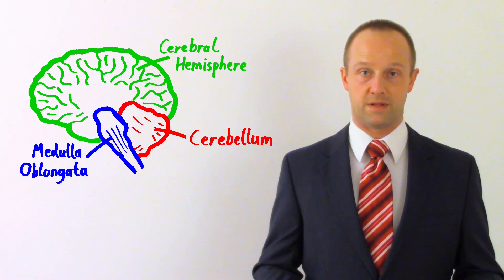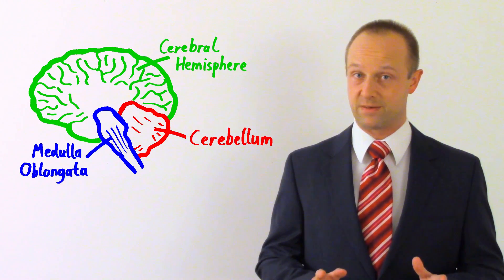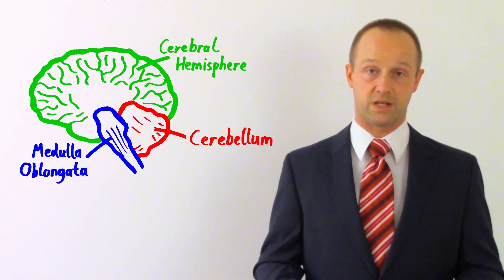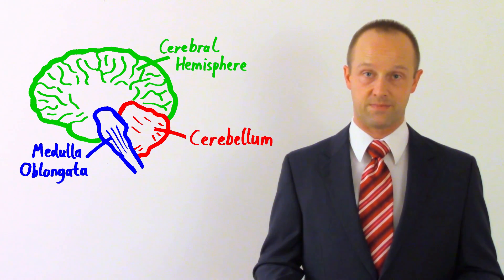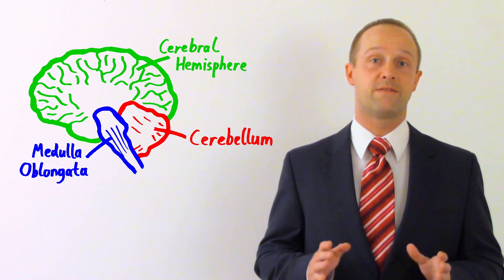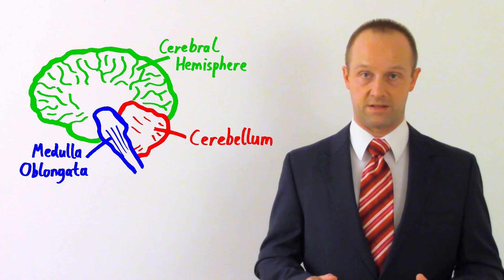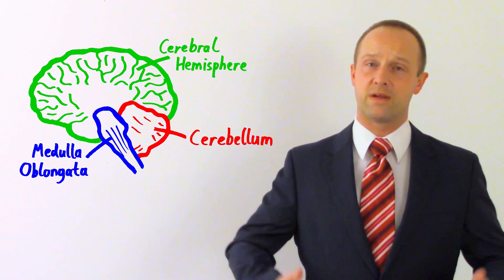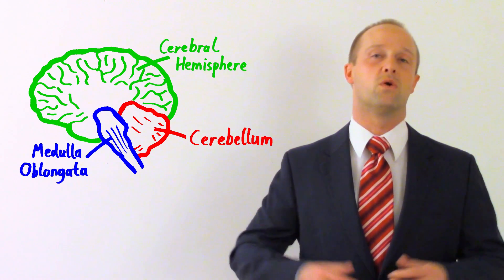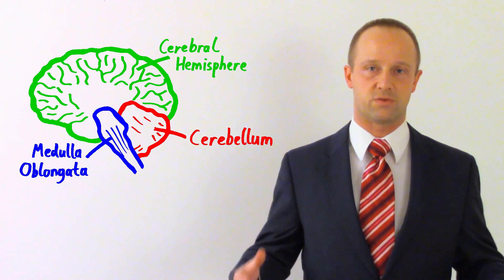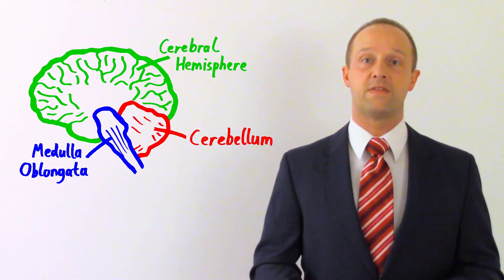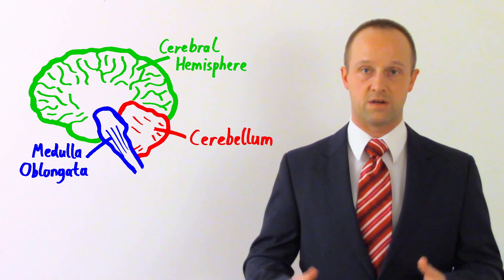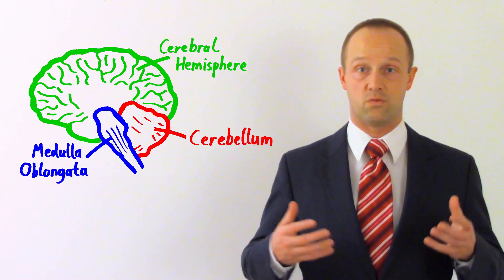Finally, up at the top — and we are skipping some key parts of the brain here, but they're not on the specifications — we've got the cerebral hemispheres. These are responsible largely for gathering perceptual information from all your different sensory systems and then making those higher-order interpretations, as well as things like logic and reasoning.